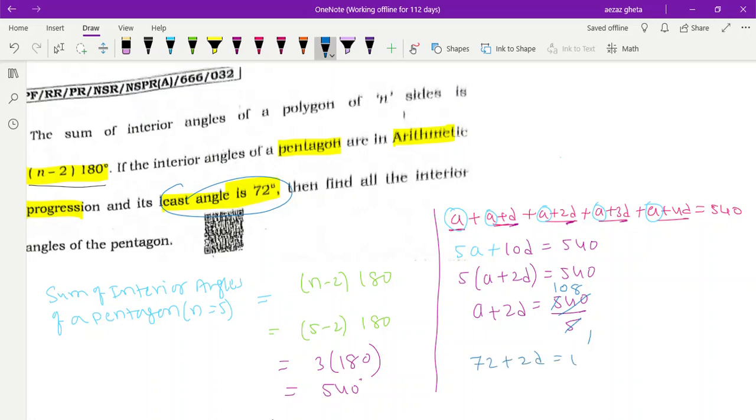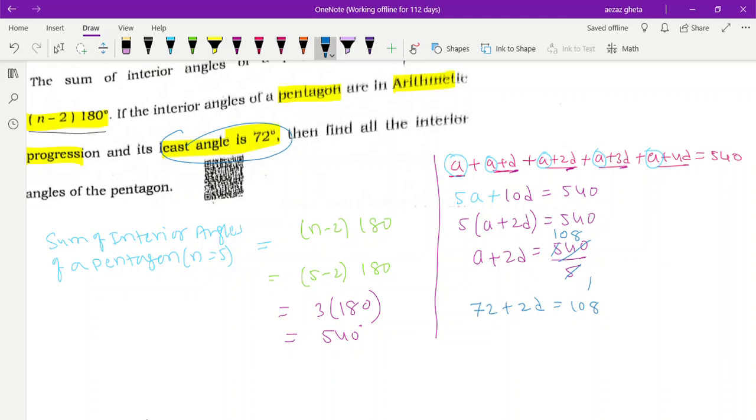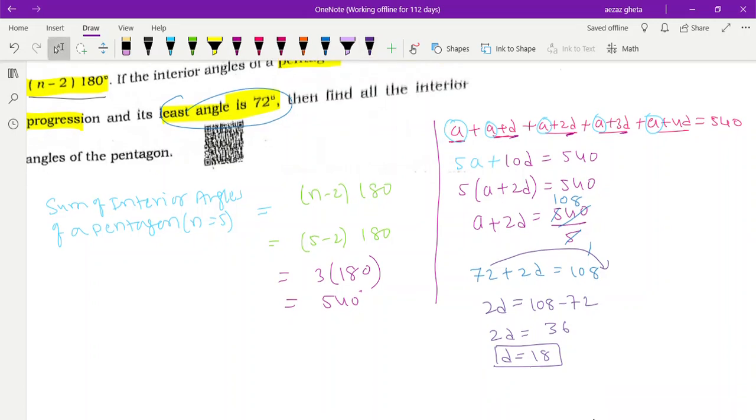We know a is 72. So 72 plus 2d equals 108. Therefore 2d equals 108 minus 72, which is 36. So d equals 36 divided by 2, which is 18. They asked to find all the interior angles.